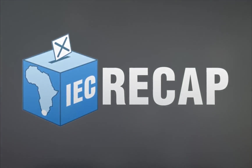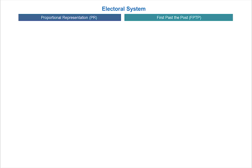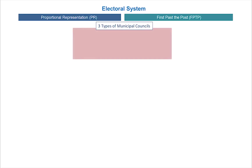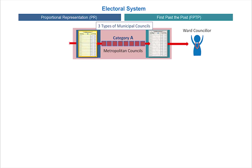To recap, we take a look at our electoral system. In municipal elections, the electoral system contains a mix of proportional representation and first-past-the-post characteristics. There are three types of municipal councils: Category A – Metropolitan Councils. In a Metropolitan Council election, a voter gets two ballots: the white or grey for a ward councillor, and the yellow for a political party list.